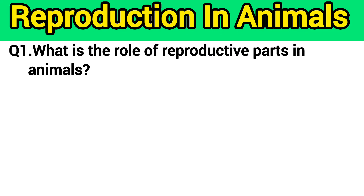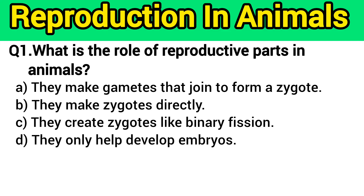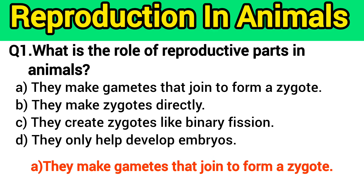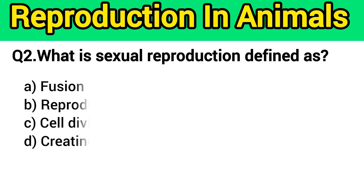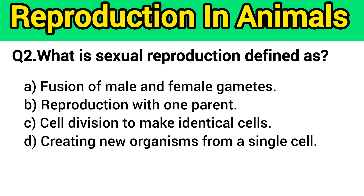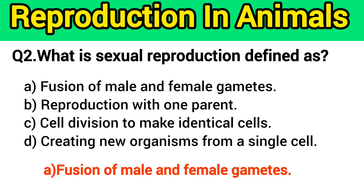Question number 1: What is the role of reproductive parts in animals? The right answer is option A — they make gametes that join to form a zygote. Question number 2: What is sexual reproduction defined as? The right answer is option A — fusion of male and female gametes.